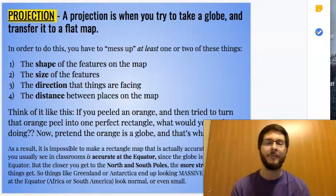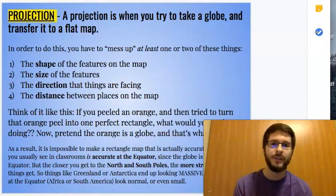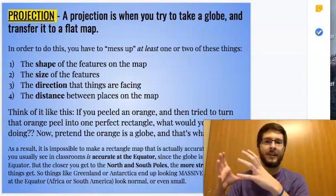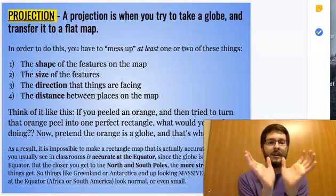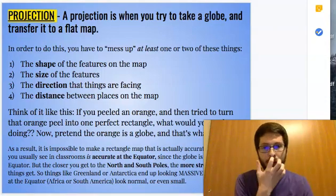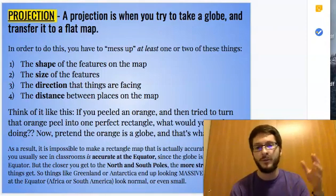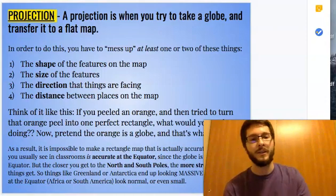A projection is the process of transferring the images on a globe and putting it onto a flattened map. If you're going to do that process, which you have to do when you're making a map, you're going to end up messing up one or two or three or even all four of these following things.